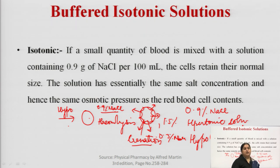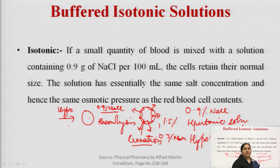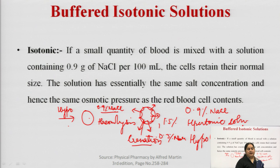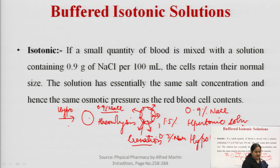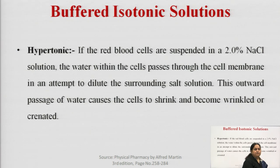So if a formulation is hypertonic or hypotonic and it has been injected into the blood, it can cause the immediate death of the patient. While formulating injectables or parenterals, you should keep in mind that the solution should be isotonic — meaning it should have the same tonicity as that of the blood. If it is not, it can cause fatal consequences.